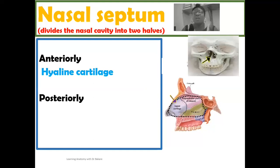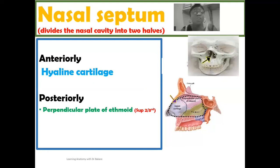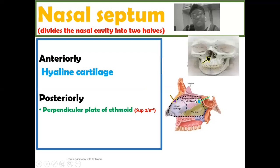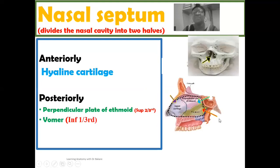The bony compartment is made up of two bones. We have the perpendicular plate of the ethmoid bone forming the superior portion of the bony compartment of the nasal septum, and this is highlighted here in blue. While the inferior portion is formed by the vomer, and this is highlighted here in red.